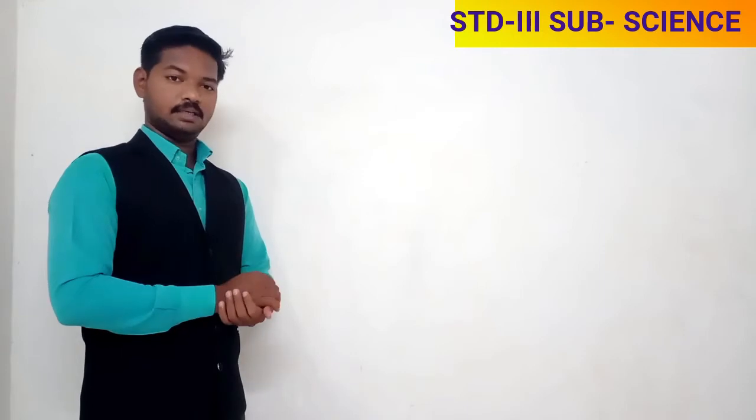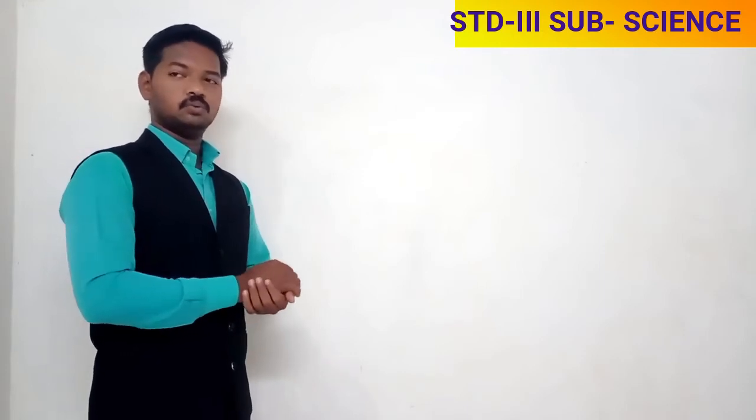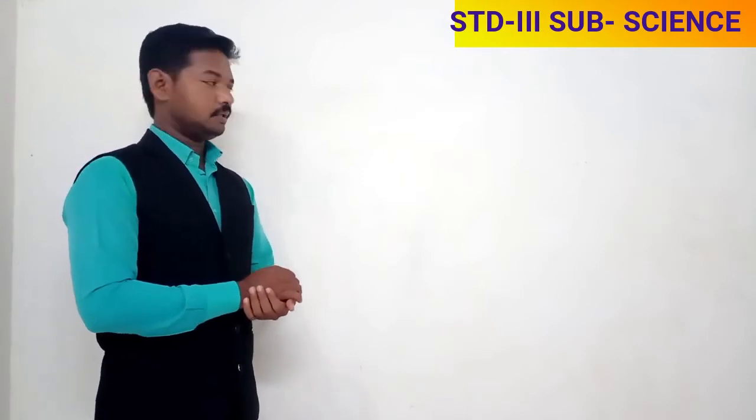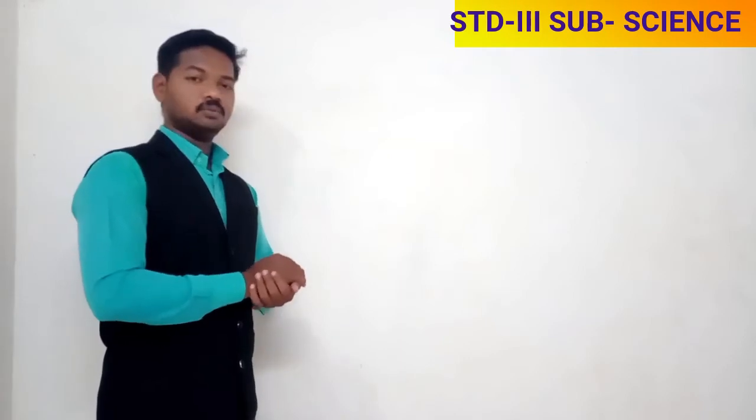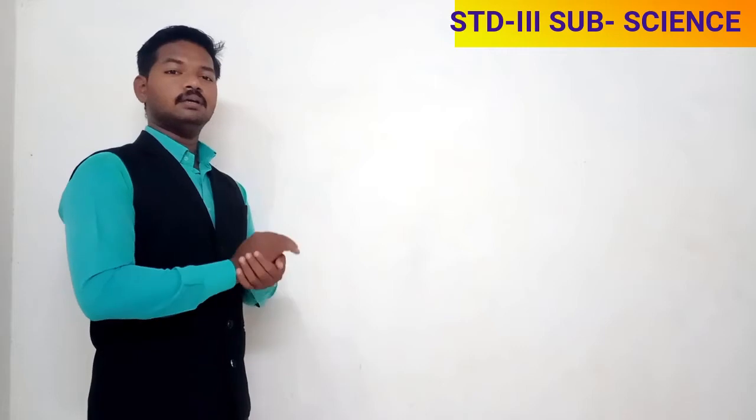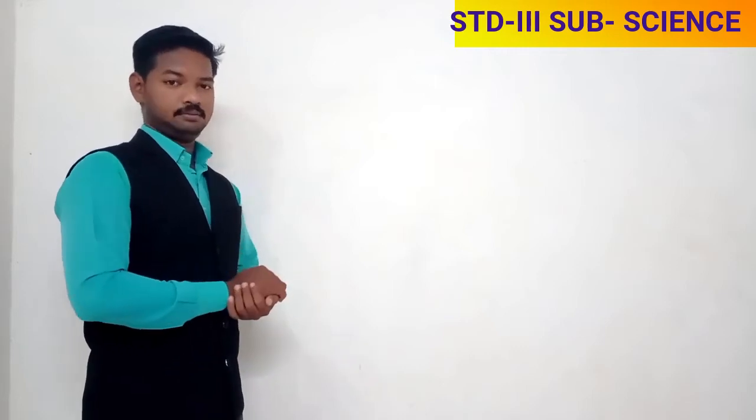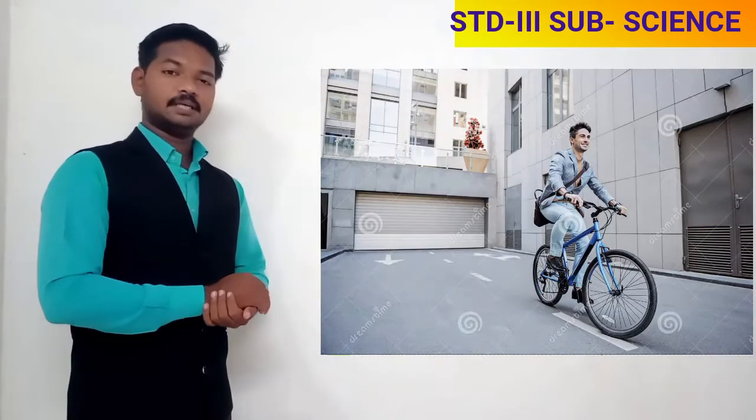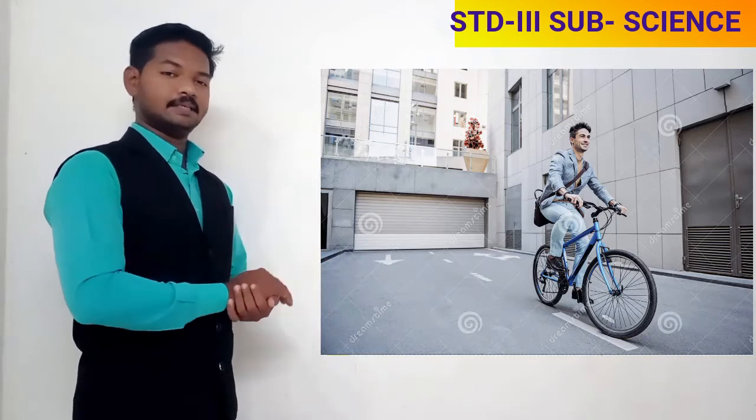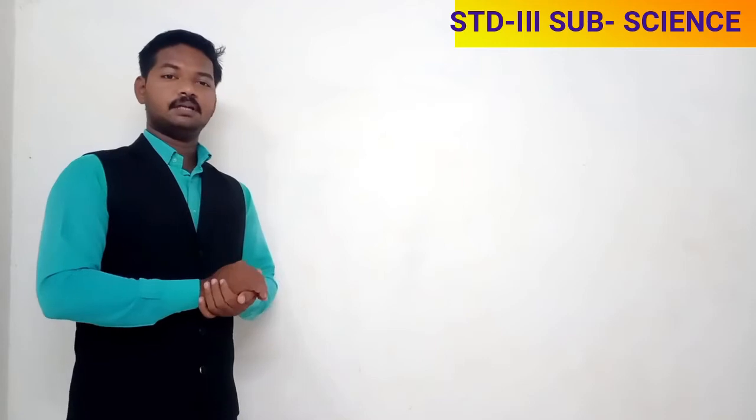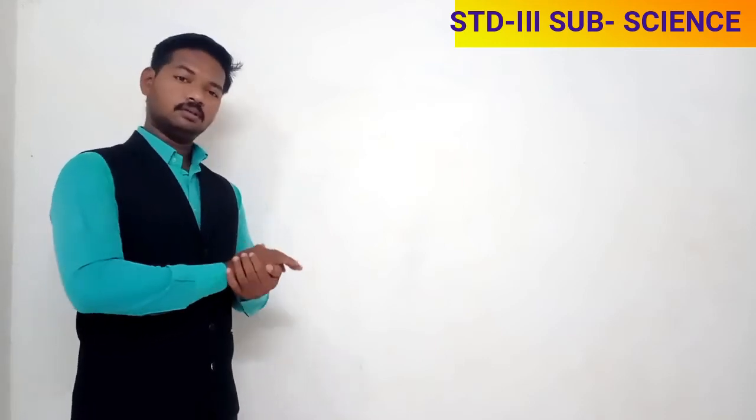When there is no pedestrian light, first look to your right, then your left, again to your right, and cross the road when it's clear. Stay on the left side while riding a bicycle on the road. These are all safety manners you have to follow on the road.